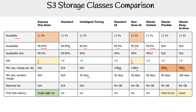For Standard IA and One Zone IA, you have to keep objects for 30 days minimum. If you put an object in and try to remove it early, you're still going to be charged for the full 30 days. For Glacier Instant and Flexible, it's 90 days. For Glacier Deep Archive, the minimum is 180 days. And if you lock down your data with a compliance lock, you're going to pay whatever the permanent lock's retention hold specifies.